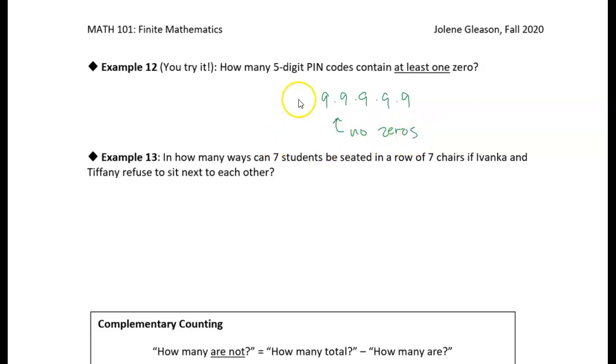Okay, and then we just want to subtract that from the total number of ways that we could create the PIN code with no restrictions. So if there's no restrictions, there would be ten choices for the first number, ten for the second, ten for the third, ten for the fourth, and ten for the fifth. This case is no restrictions.